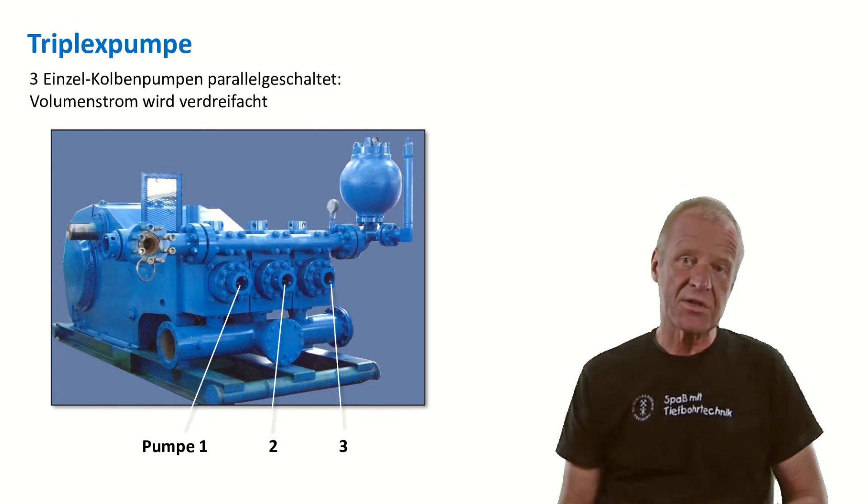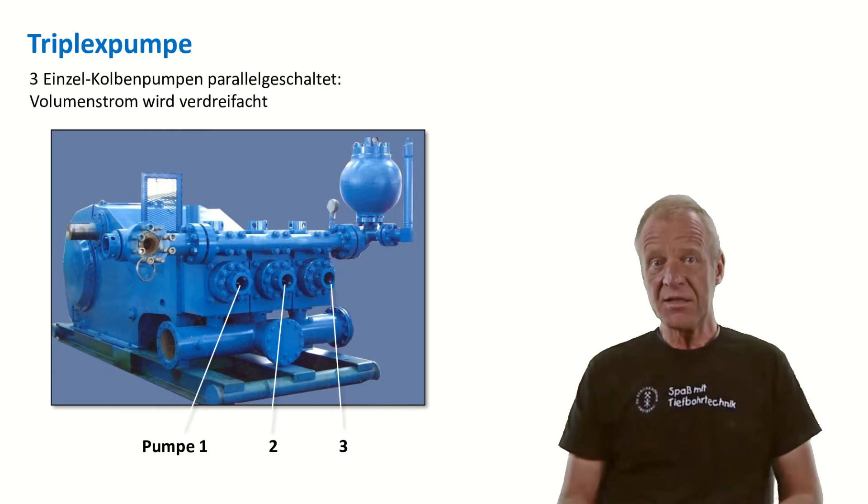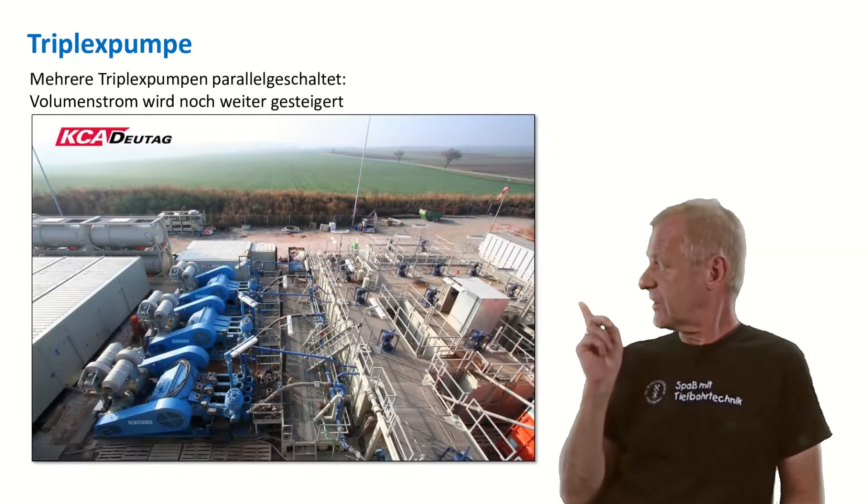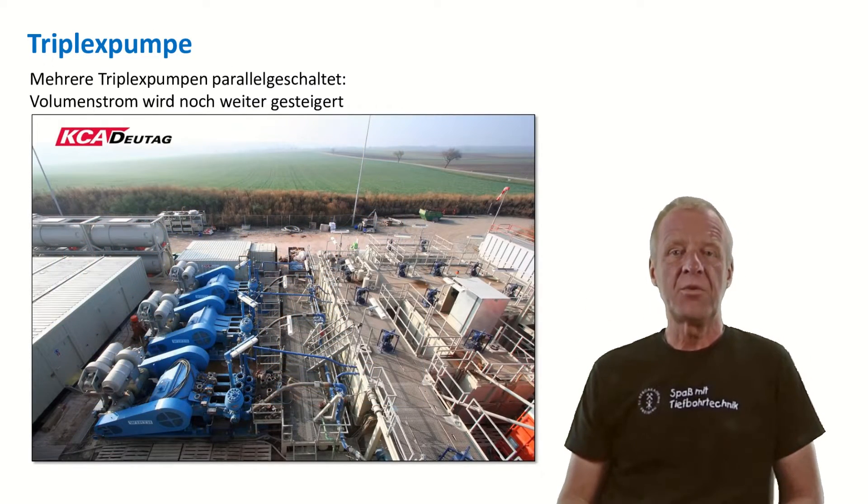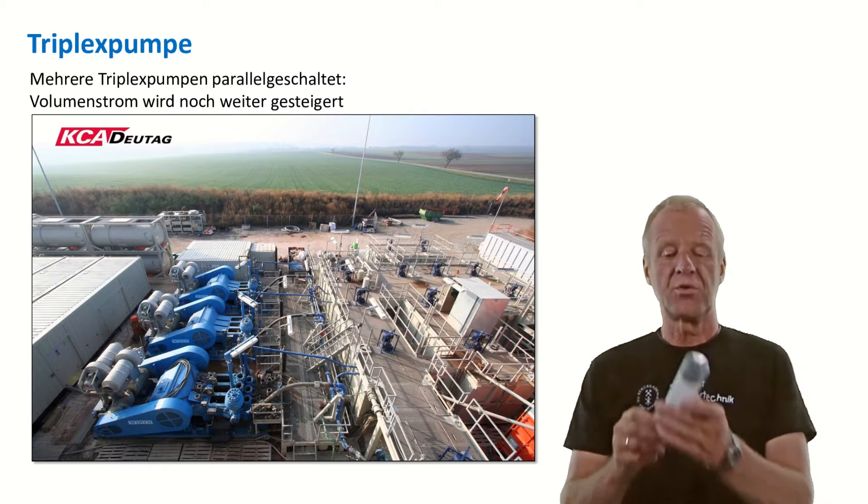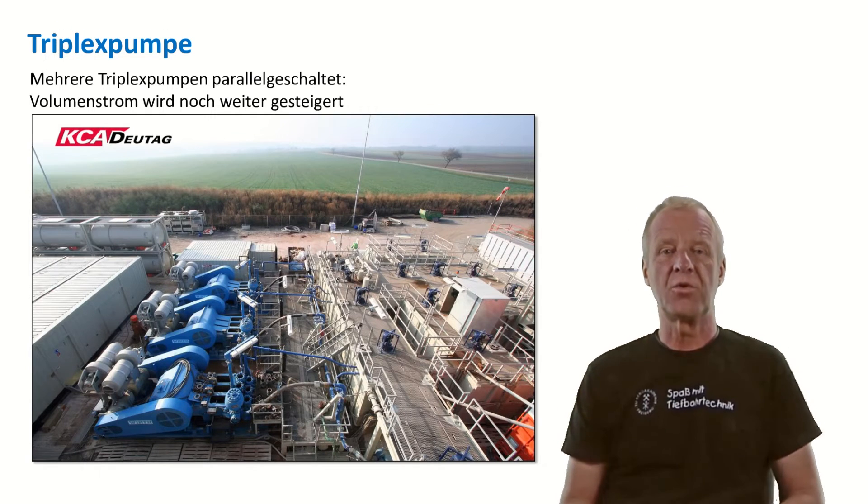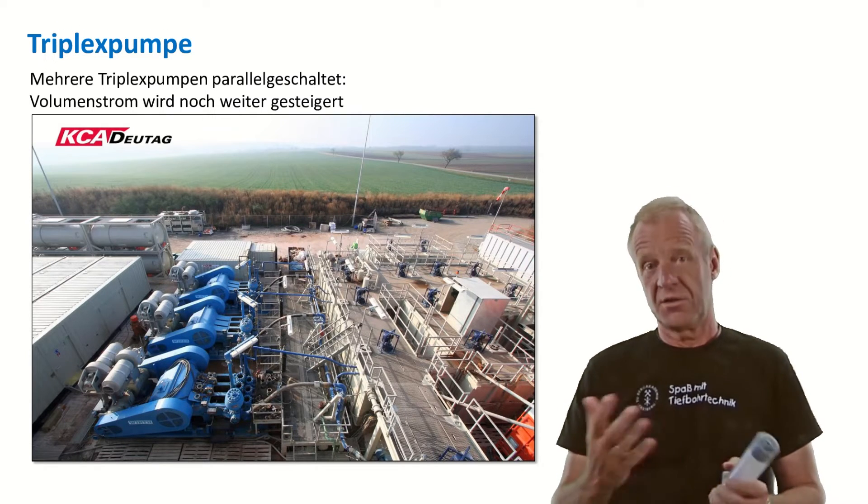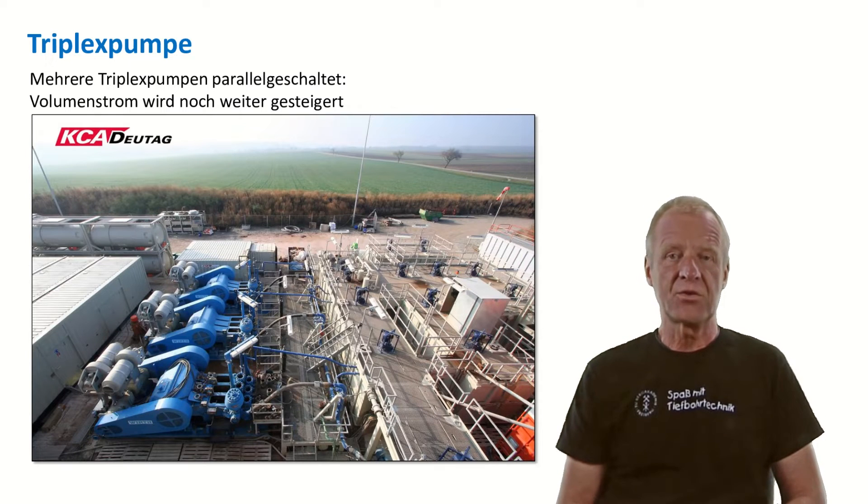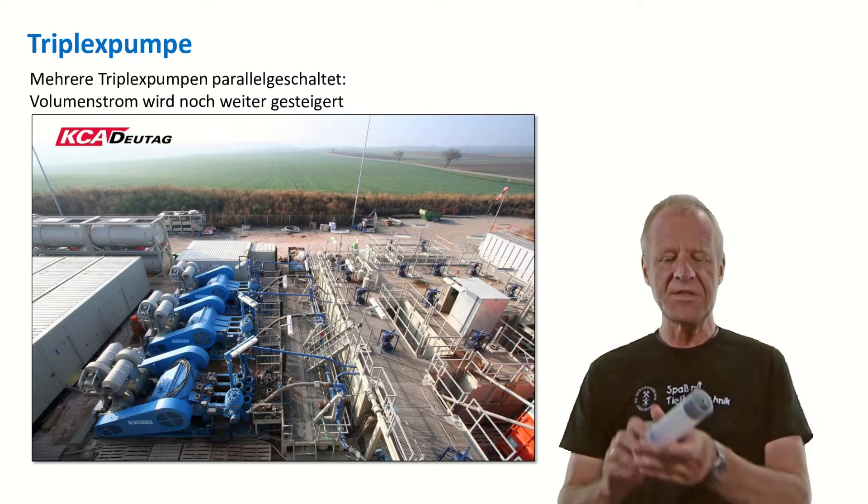If that is still not enough, then you can use several triplex pumps at the same time, just like this. Three triplex pumps making a total of nine piston units, thus providing nine times the flow rate of a single piston pump. So obviously we have solved the problem of flow rate.